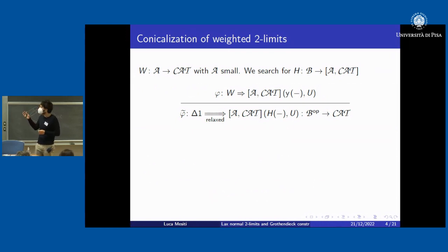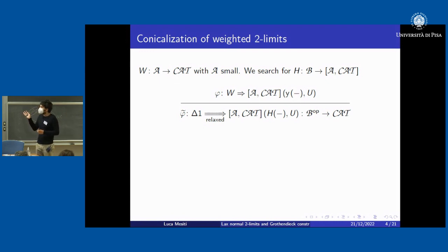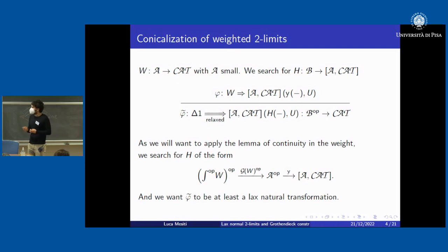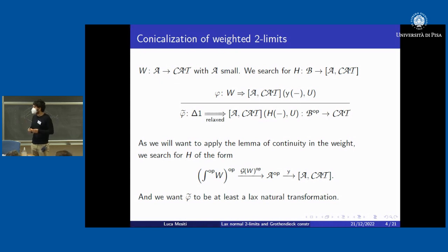Let's consider the Cat-enriched case and those special colimits of representables. We try to encode a co-cylinder phi in terms of a possibly relaxed cocone. A strict cocone would never work, because in dimension two phi also has an assignment of morphisms. But admitting two-cells inside the cocones, we can encode everything. To apply the lemma of continuity in the weight, we search for a diagram that is the unit embedding pre-composed with something we need to determine.